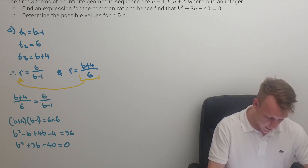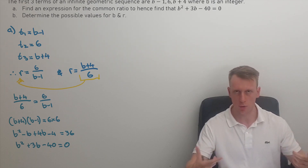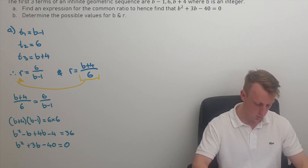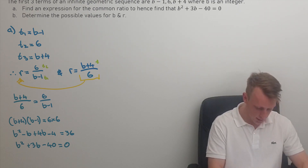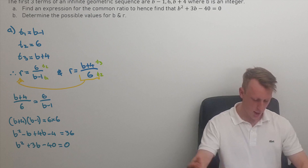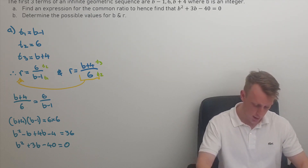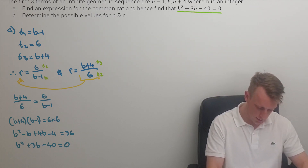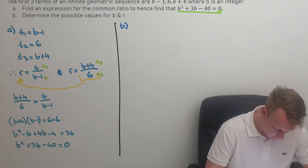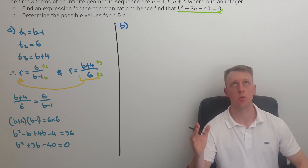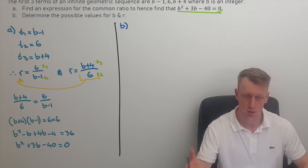For the first part of the question we've found the common ratio, which is just a term divided by its previous term. We've got two expressions: t2 divided by t1, and t3 divided by t2. We substitute them into each other to find an expression in terms of B. Now we need to determine the possible values for B and R.